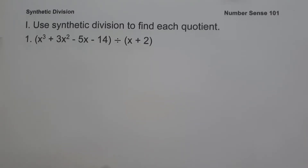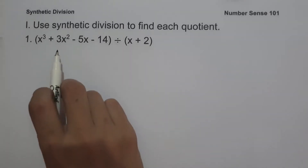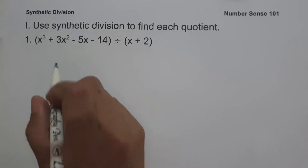On number one, we have the quantity x cubed plus 3x squared minus 5x minus 14, divided by the quantity x plus 2. The first thing we are going to do is write the coefficients of the dividend in descending power of variables.